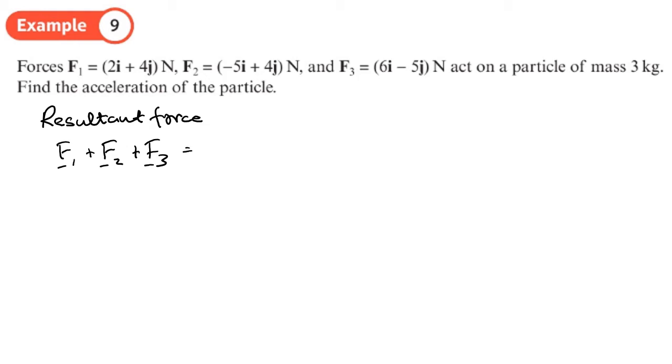These are vector quantities so that's going to be 2i plus 4j plus negative 5i plus 4j and then 6i minus 5j.